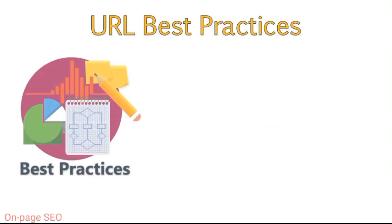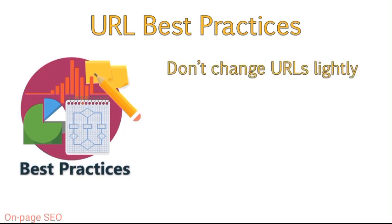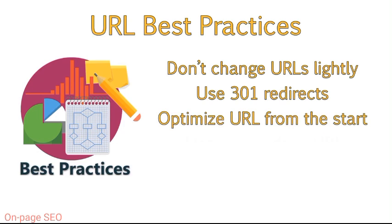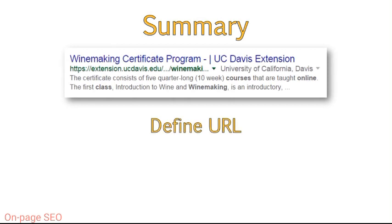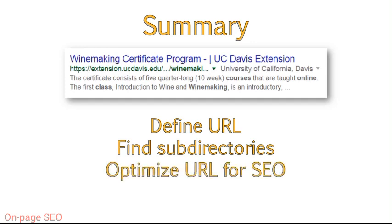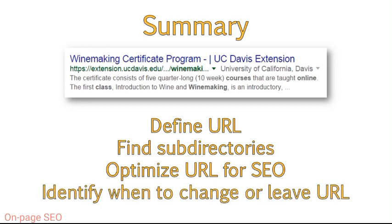Let's review some of the best practices for URLs. Don't change URLs for the sake of changing them. If you do have to change a URL, always redirect that to a new page using a permanent 301 redirect. It's always best to optimize the URL from the start. Incorporate keywords into the URL where possible. Incorporate keywords into subdirectories where possible. Keep URLs short and succinct. You should now have an understanding of what a URL is, be able to locate subdirectories within the URL, understand how to optimize a URL with SEO in mind, identify opportunities to change URLs, and know when to leave URLs as they are.